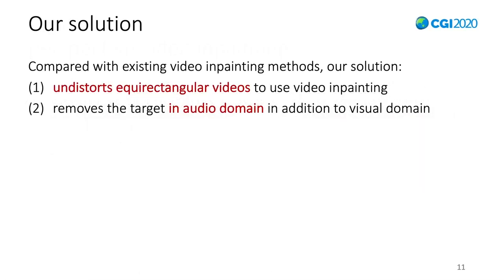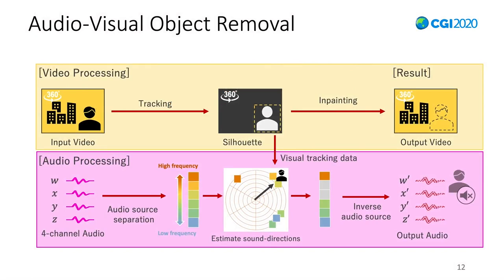Compared with existing video inpainting, we added one step before video inpainting. Our target input is a 360-degree video. However, video inpainting is applicable only to perspective video, so we undistort equirectangular videos to use video inpainting. In addition, because target sounds are out of focus in existing video inpainting, our solution considers the audio domain in addition to the visual domain. Our solution consists of two phases: video processing, which is the yellow area, and audio processing, which is the pink area.